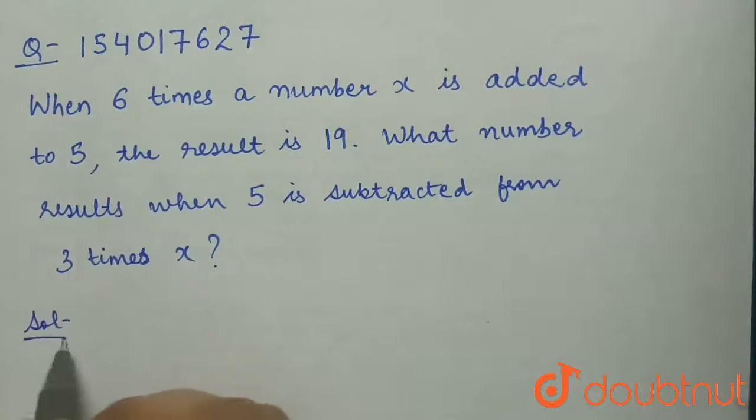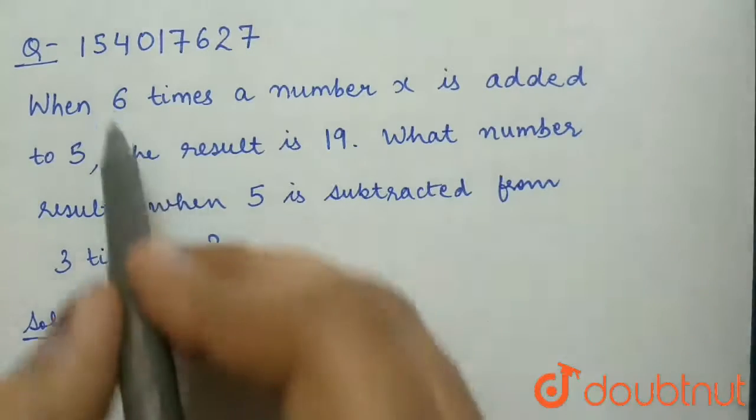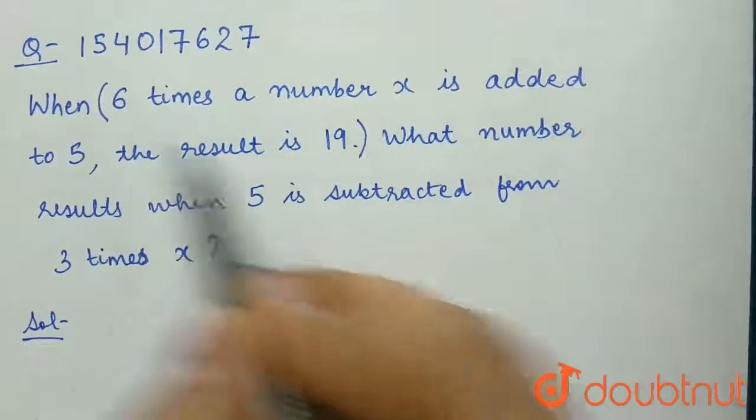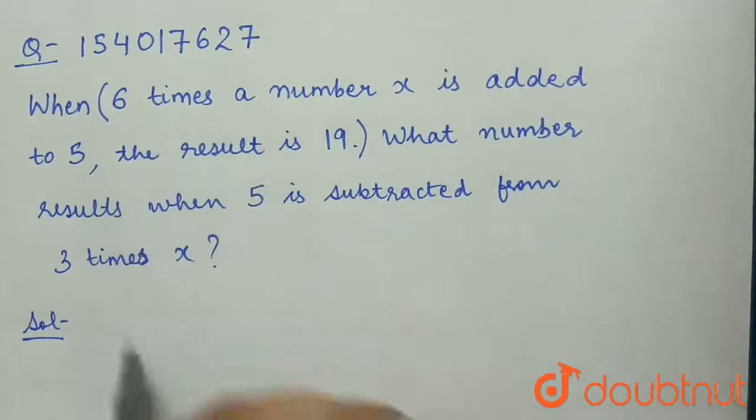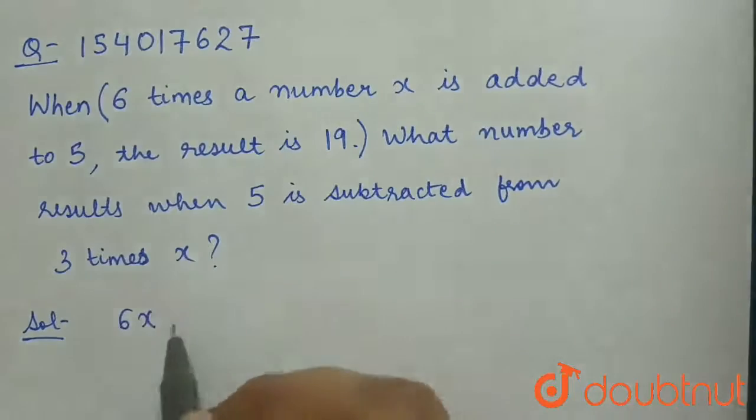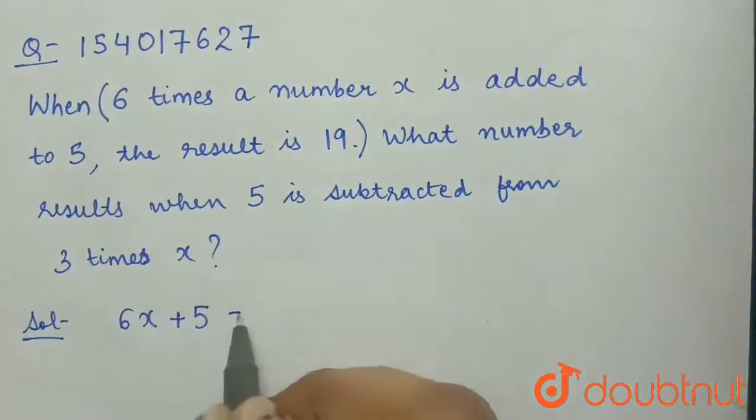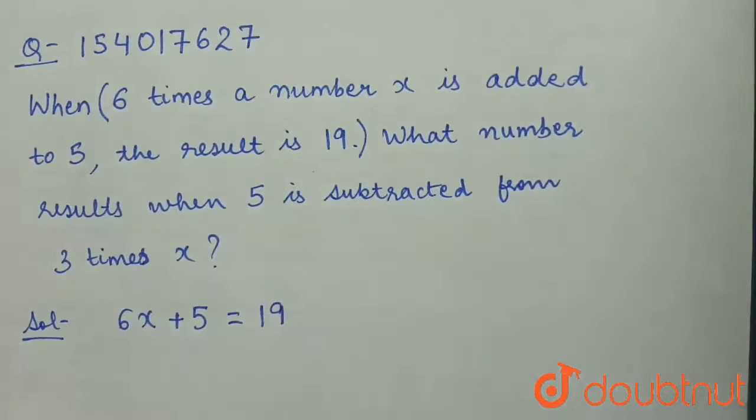Our solution will be: first, we will write the expression of the first line. 6 times a number x is added to 5, that is 6x plus 5, results in 19, which is equal to 19.